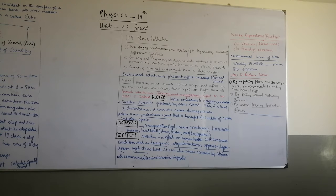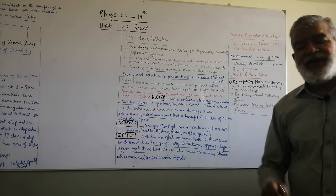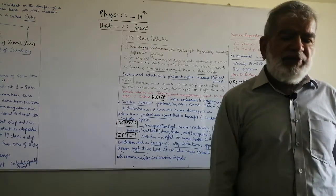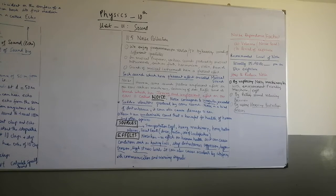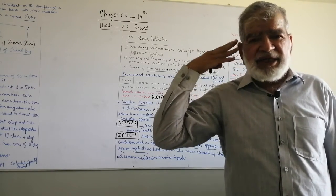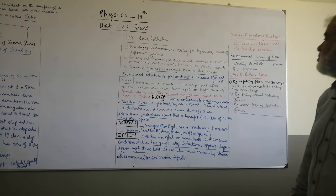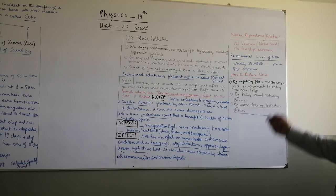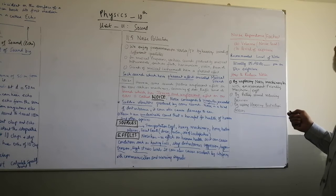Noise depends on two main factors. One is the volume — what is the level of sound coming from heavy machinery, traffic, or heavy communication systems? The second is the period of exposure — for how long is your ear exposed to that sound, with the eardrum constantly vibrating? So the two noise factors are: one, volume of noise; two, exposure to the noise.